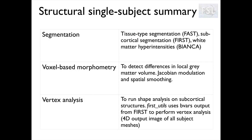Things to remember for structural analysis: for segmentation, the main tools are FAST for tissue type segmentation, FIRST for subcortical structures, and BIANCA for white matter hyperintensities. For VBM, it is used to detect differences in local gray matter volume, and we need to modulate our gray matter maps and apply spatial smoothing. For vertex analysis, we run FIRST utils on the output of FIRST to look at shape differences in subcortical structures.